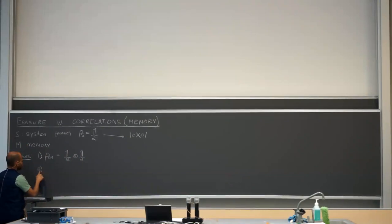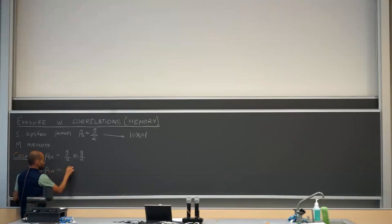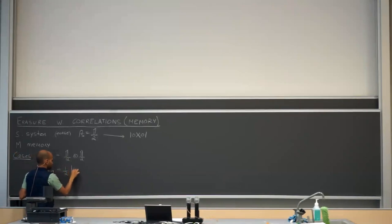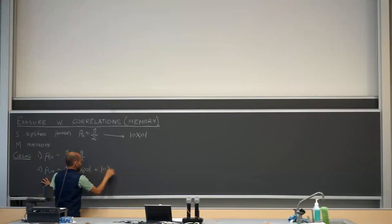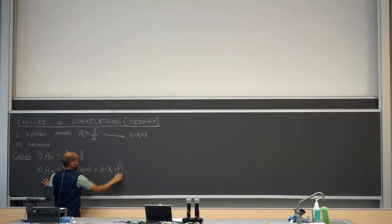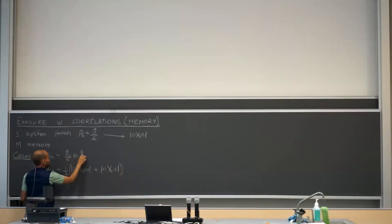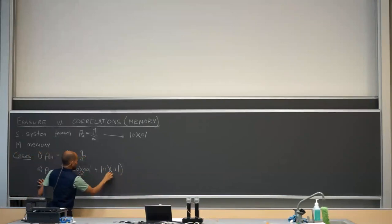In case one, rho_{S,M} is given by the product (identity/2) ⊗ (identity/2). In case two, the system and memory are classically correlated, so we have (1/2)(|00⟩⟨00| + |11⟩⟨11|), where the first index labels the system and the second labels the memory.